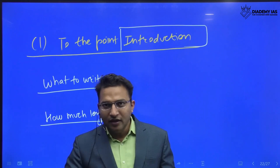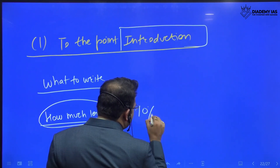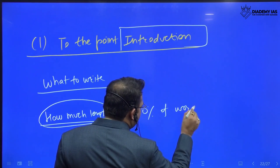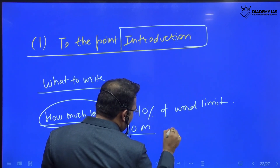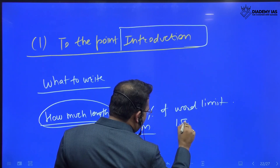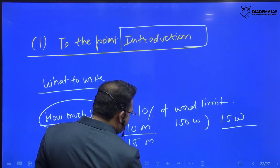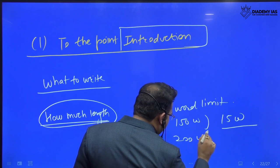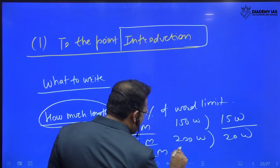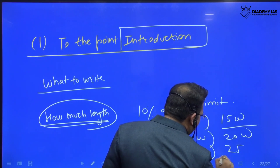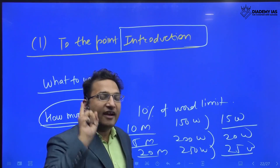How much should be the length? You should write maximum 10% of the word limit. For example, in 10 marker, 150 words is the total limit, so write 15 words in the introduction. In 15 marker, 200 is the expected words, so 20 words. In 20 marks, 250 words is the maximum word limit, so 25 words you should write in the introduction. This should be the length because every sentence is important.